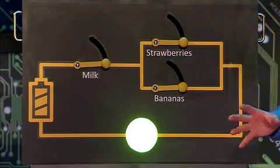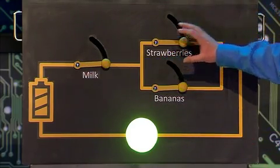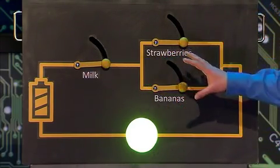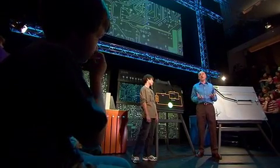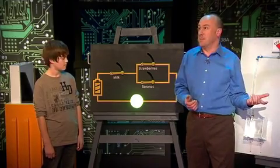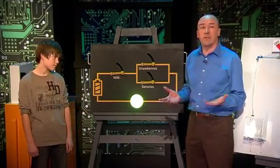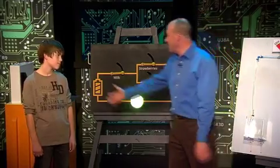So what this says is that to make a milkshake we need milk and we need either strawberries or bananas or both. Now that kind of reasoning is called logic and computers are very good at it. Now the logic circuits in a microprocessor are vastly more complex than this but the principle is just the same. They're based on switches which are either on or off. Okay, thank you very much.